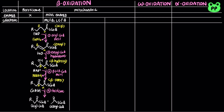Peroxisomal beta-oxidation is much more active on very long-chain fatty acids (VLCFA) as well as branched-chain fatty acids (BCFA). In peroxisomes, oxidase passes electrons from FADH2 directly to oxygen, reducing it to hydrogen peroxide, which is a strong oxidant and is immediately cleaved to water and oxygen by catalase. The energy released from the first oxidation step isn't conserved as ATP, but is dissipated as heat.